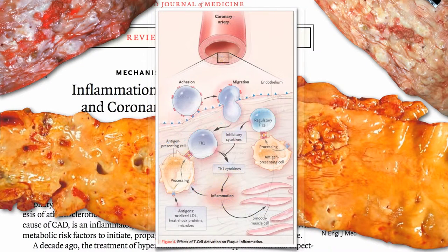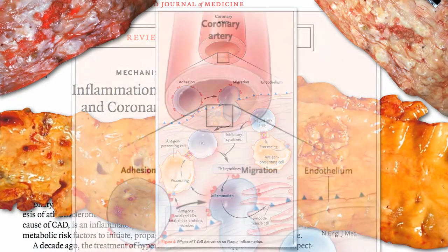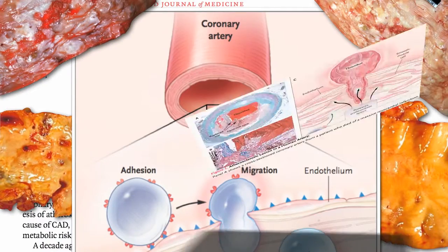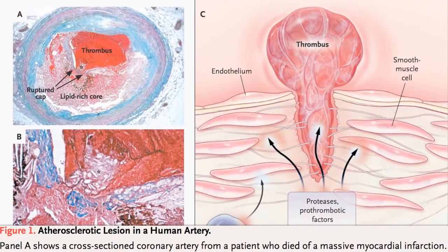Other inflammatory cells are called into action, and it gets pussier and more inflamed, and turns into a big whitehead sticking out like a zit into the blood flow inside our arteries. The blood's pulsating past and can rip off the cap, and you get a big squirt of pus straight into your artery.